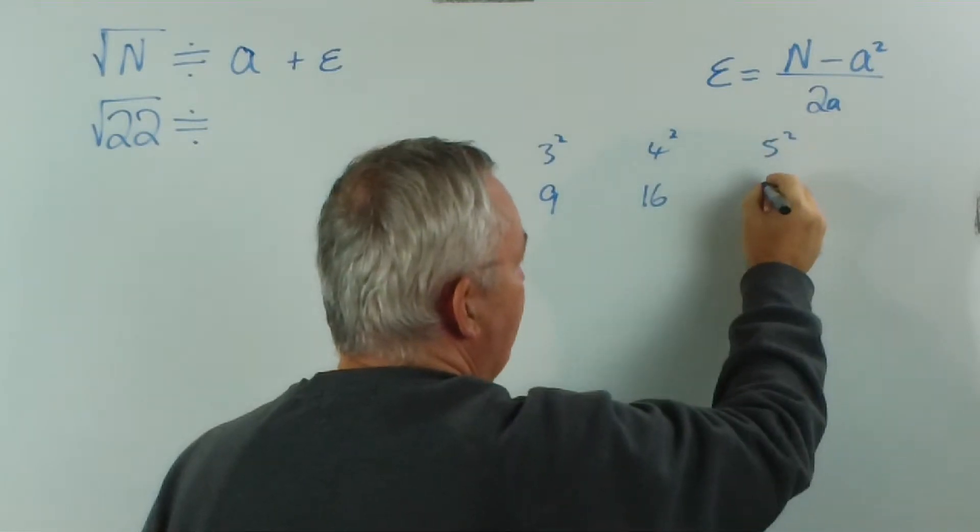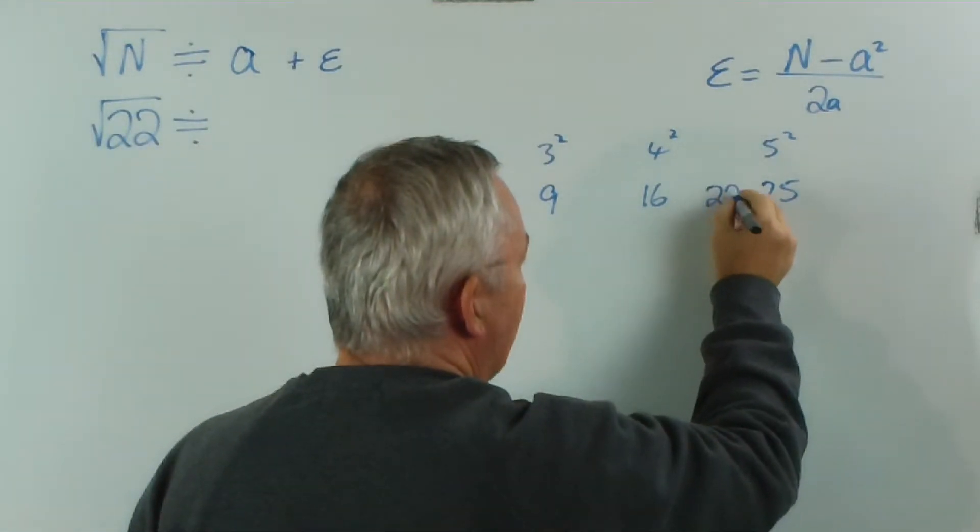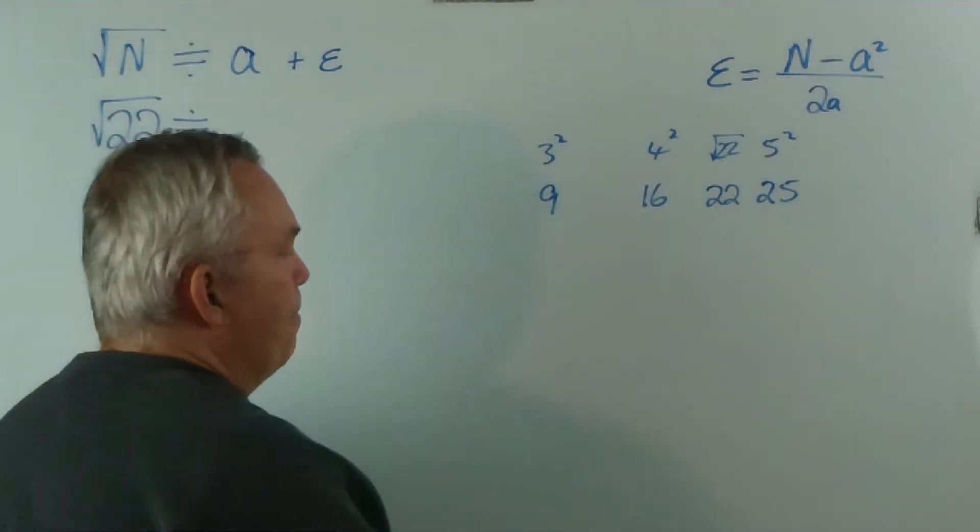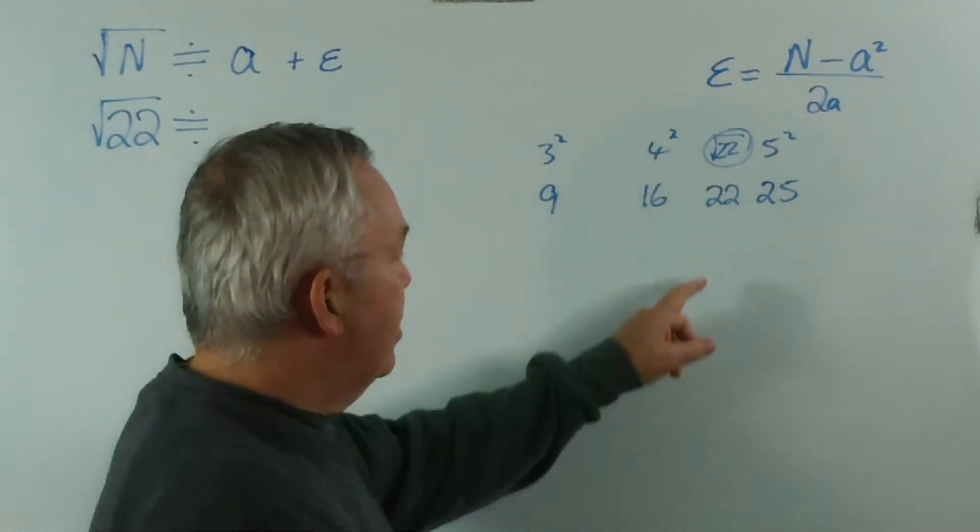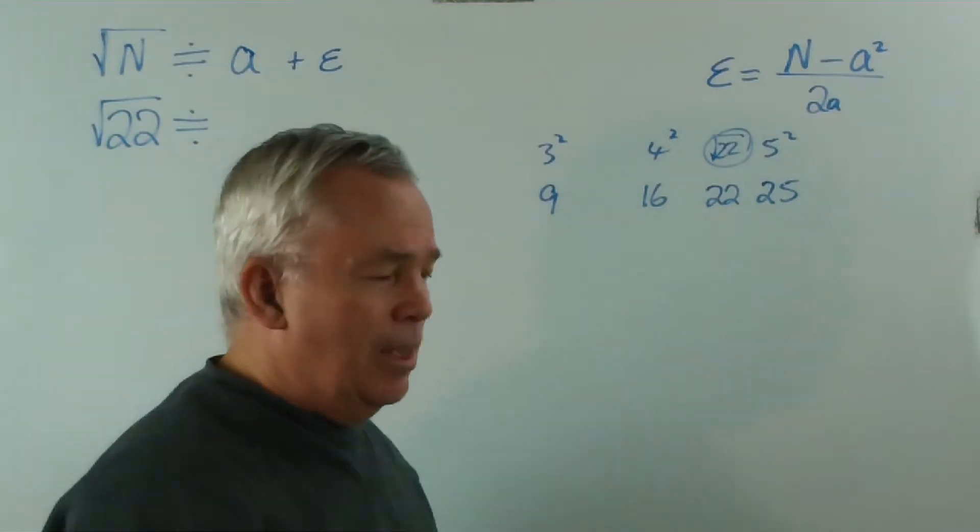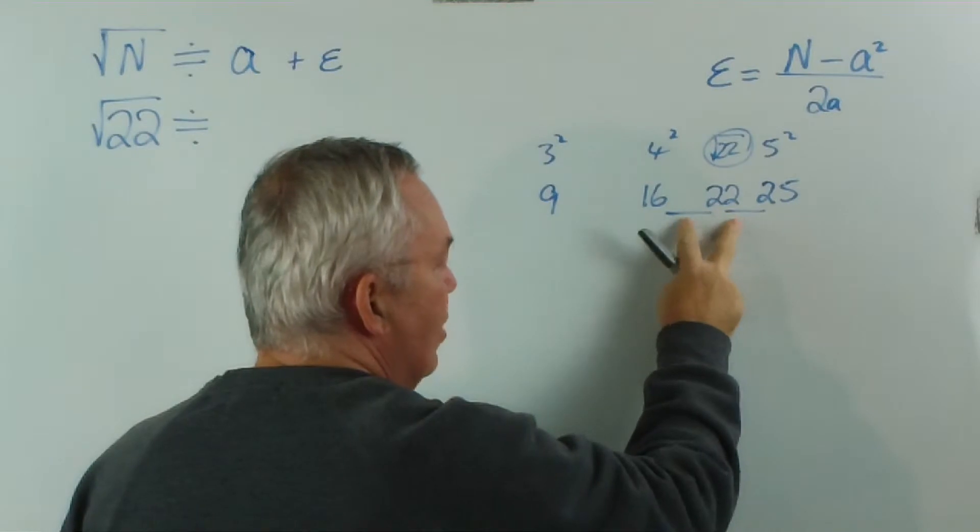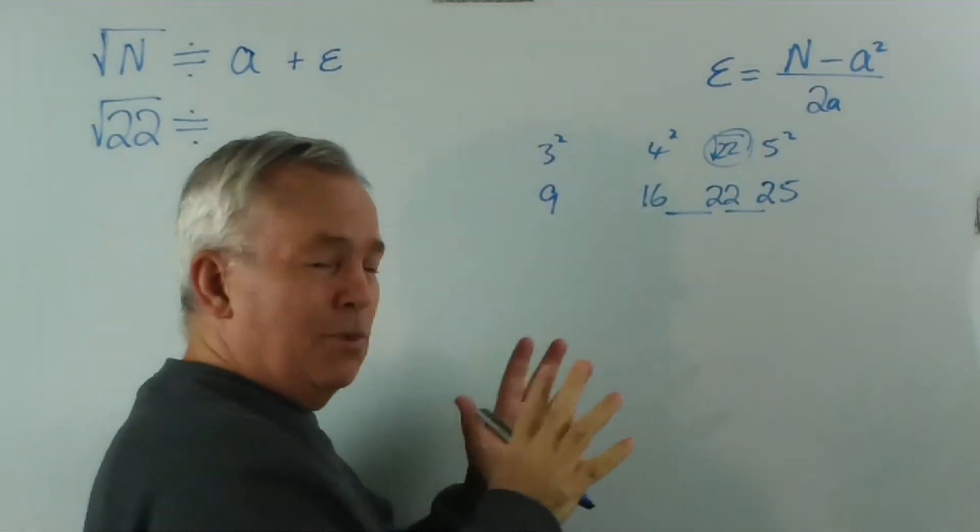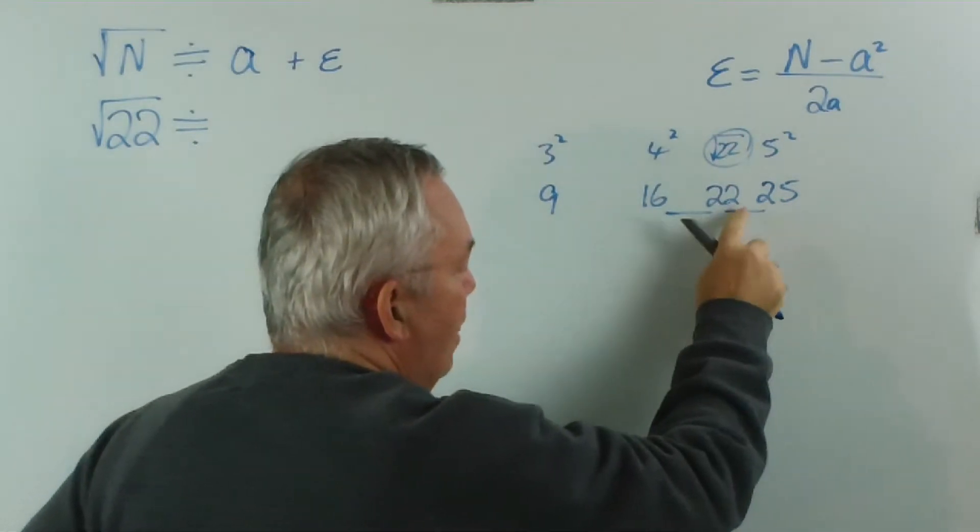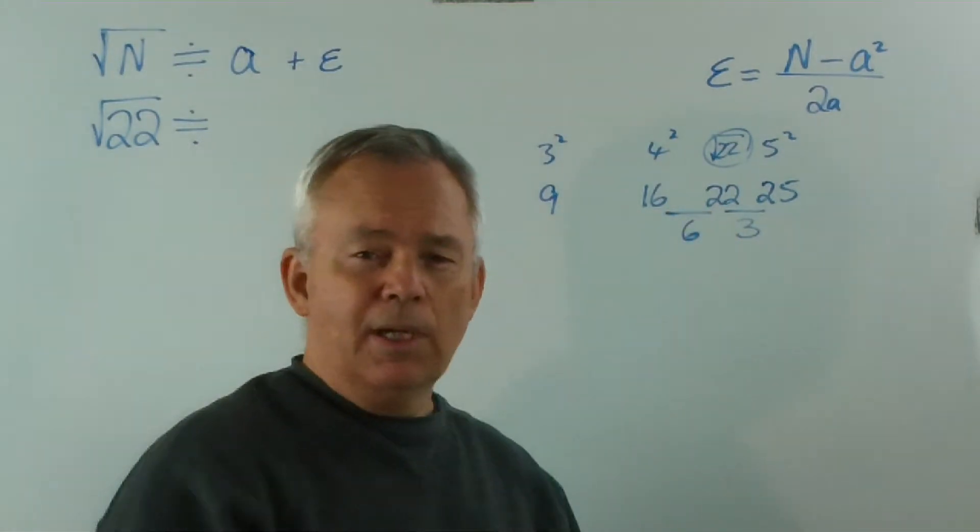5 squared is 25, and so forth. But the number we're after lies between 16 and 25. This is where the square root of 22 lies. We would like to get a fair approximation for this. Let's look at the gaps between these numbers. The gap between 22 and 25 is 3, and the gap between 16 and 22 is 6. And 6 and 3 is 9, which is very close to 10.